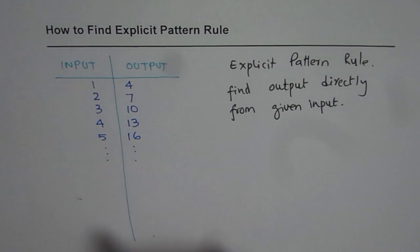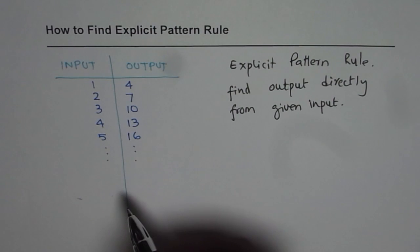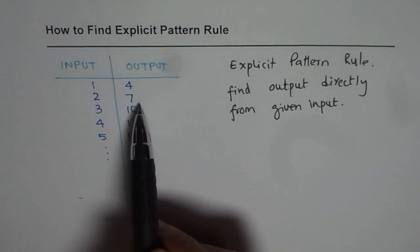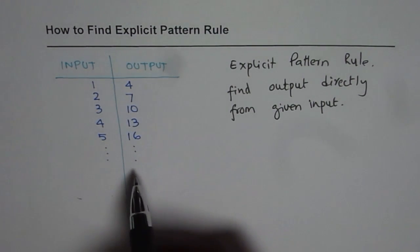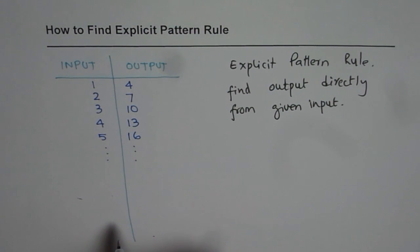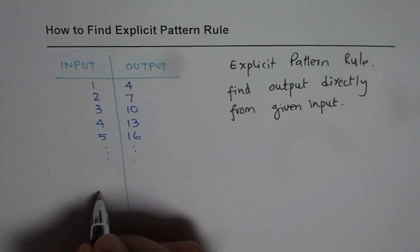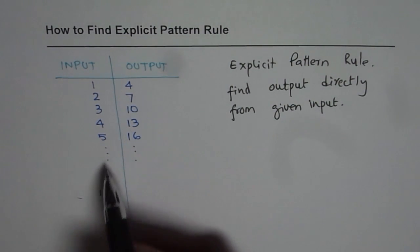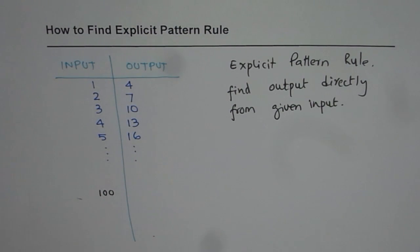Well there is another way of finding the output and that is by using recursive formula. Recursive formula in this case will be you start at 4 and increase by 3 each time. So that way you can always find the next number. Problem with recursive formula is that if I want to know what should be the output for 100 as my input then I have to repeat this process 99 times. I have to find all previous 99 input output relations to get the hundredth and that is very time consuming. And therefore explicit pattern rules have an advantage.